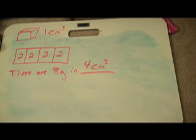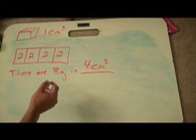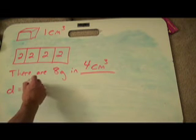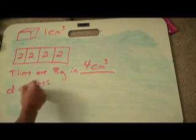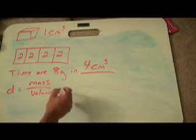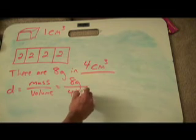And then to express this as a ratio, for density we always have density is the comparison of mass of something for the volume of something. And in this case we're going to have 8 grams in 4 cubic centimeters.